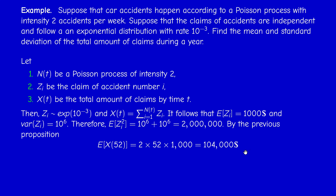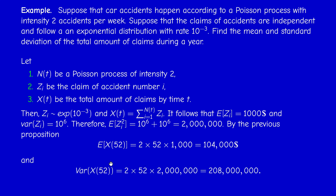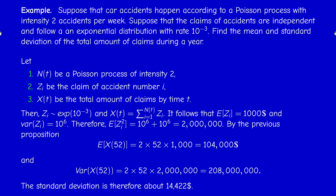Applying the second formula, the variance integral gives 2×52 multiplied by E[Z_i²] = 2,000,000, yielding a variance of 208,000,000. Taking the square root gives a standard deviation of approximately $14,000. So the company expects to pay $104,000 in total claims per year, with a standard deviation of about $14,000.